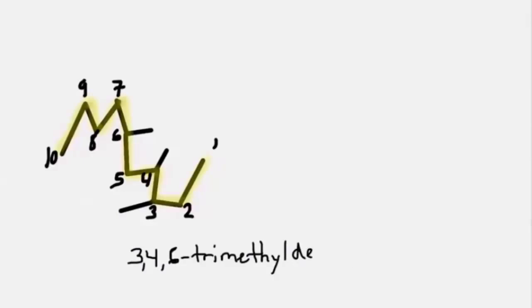we get the lowest numbers starting with 3, 4, and then 6. The other direction would give us much larger numbers of 5, 7, and 8. So the full name of this compound is 3,4,6-trimethyldecane.